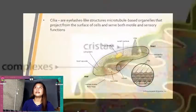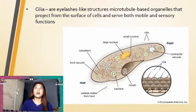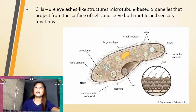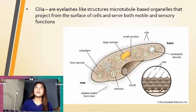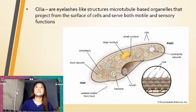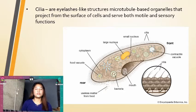Cilia are eyelash-like structures. They are called eyelashes because they look like the eyelashes of our eyes. Cilia are eyelash-like structures of microtubule-based organelles that project from the surface of cells and serve both motile and sensory functions.